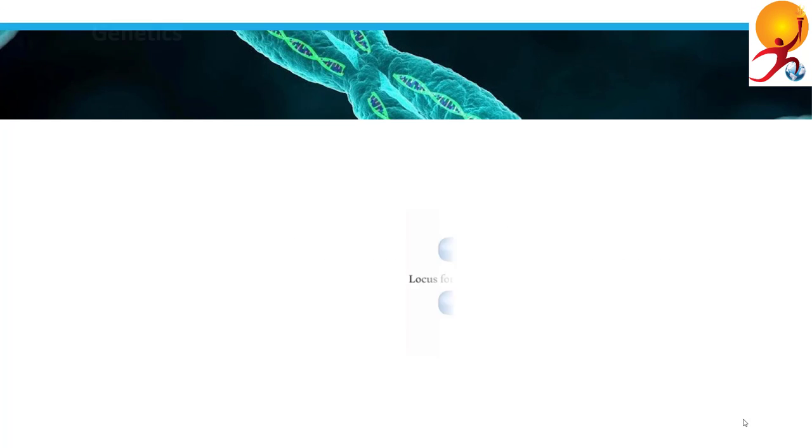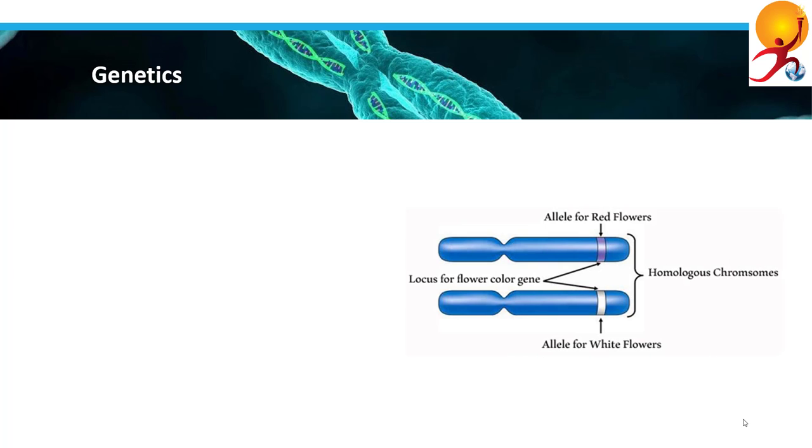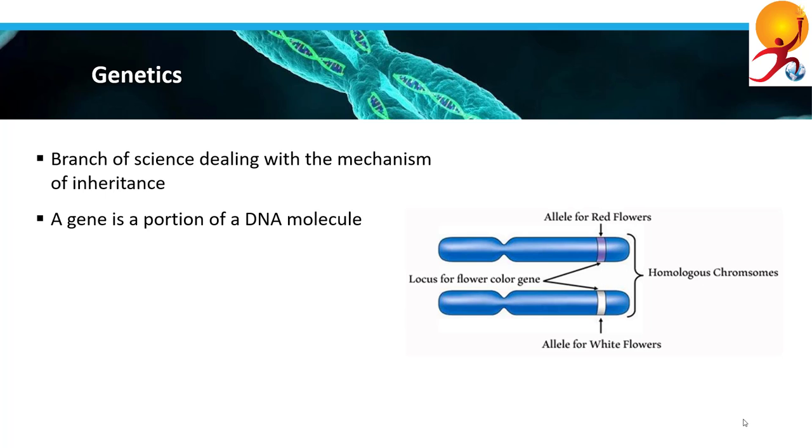Genetics is a branch of science that deals with the mechanism of inheritance. A gene is a portion of a DNA molecule that codifies a specific protein. A gene is made up of several triplets of DNA nucleotides with their respective nitrogen-containing bases such as AAG or CGT. A chromosome is a DNA molecule that may contain several different genes as well as portions of DNA that are not genes. A gene locus, where locus means place, is the location of a gene in a chromosome, or rather the position of the gene in a DNA molecule.